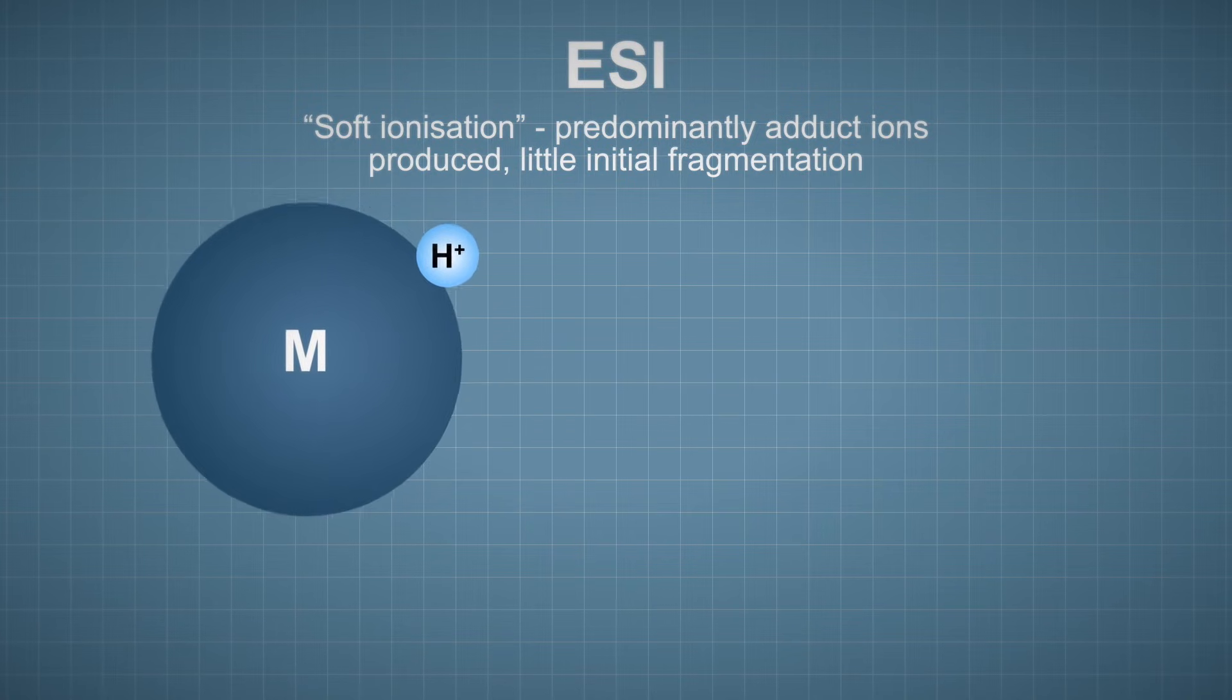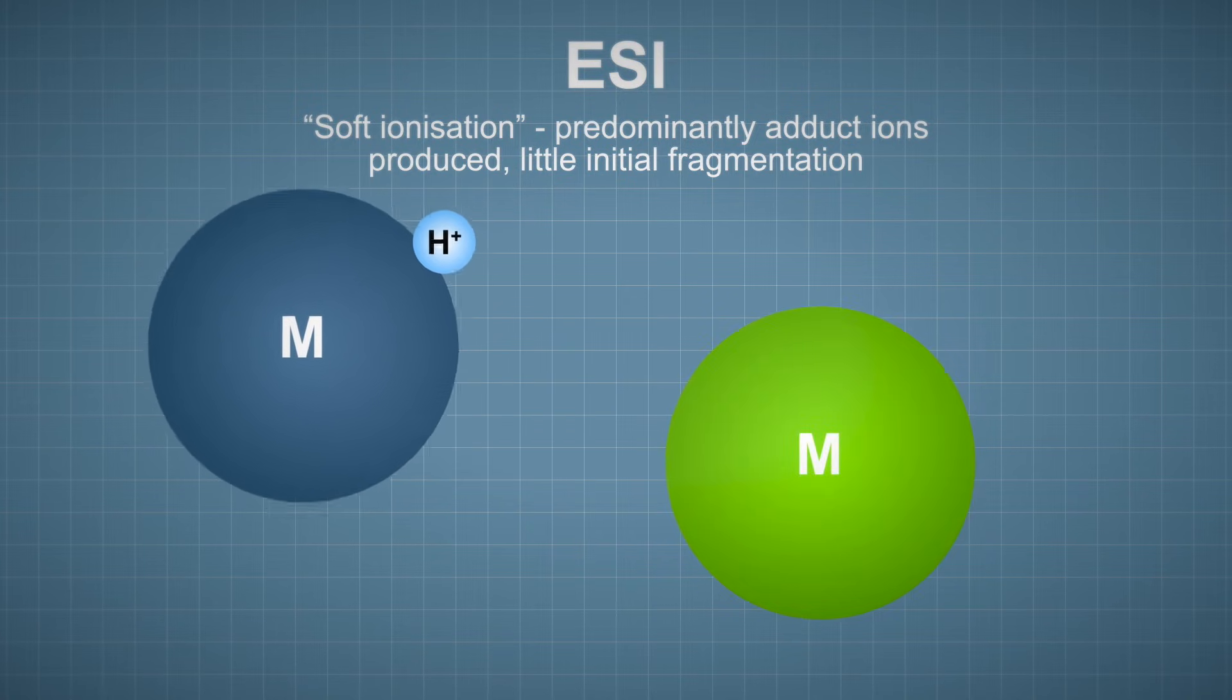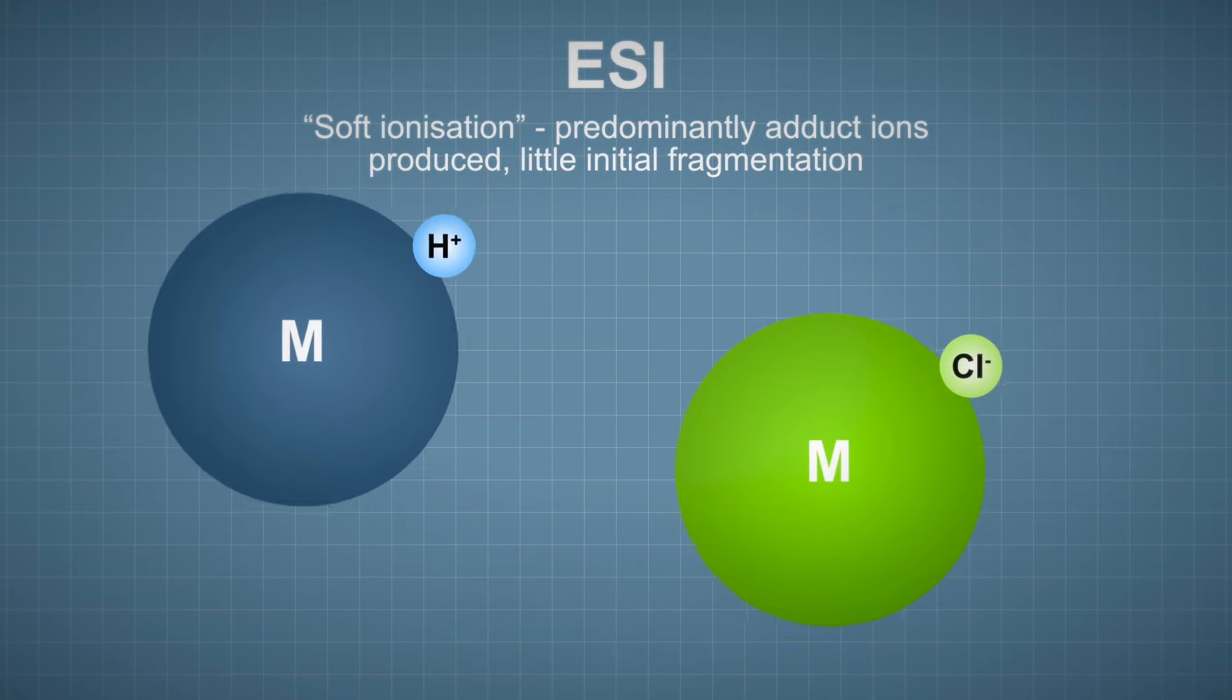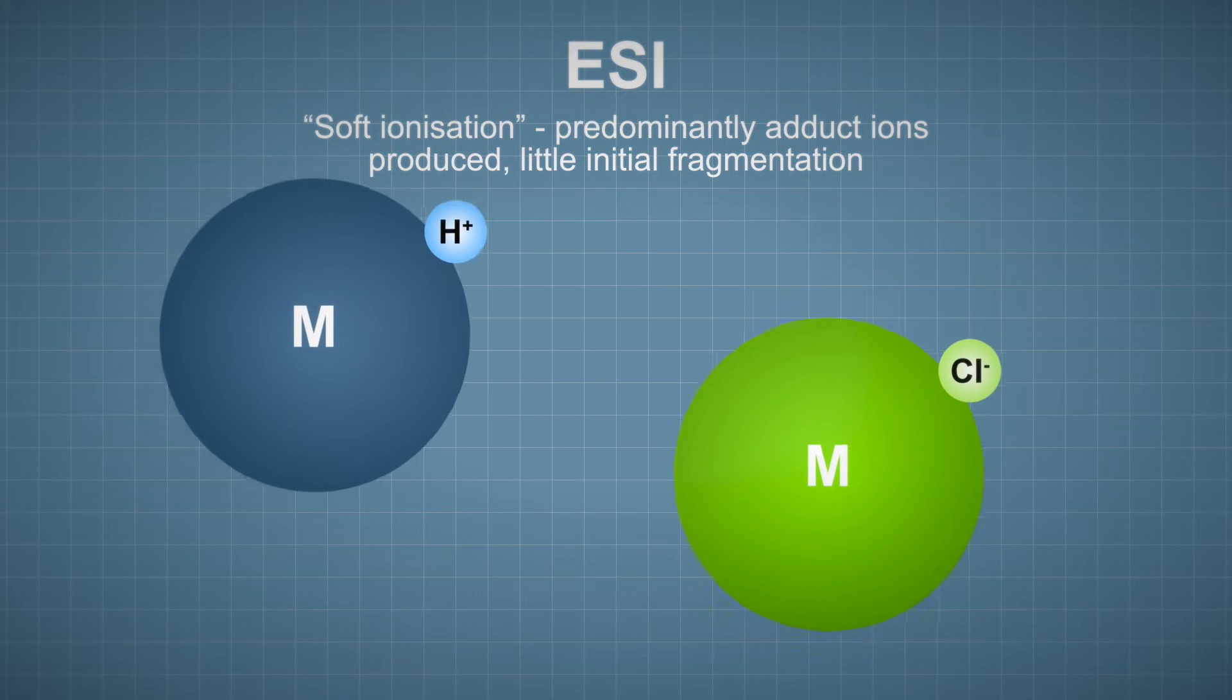It is also possible to form negative ions in ESI by forming adduct ions with anions such as chloride ions. Negative ions in ESI can also be formed by other processes such as proton abstraction, in which a proton is removed from an analyte molecule to leave a negatively charged ion.